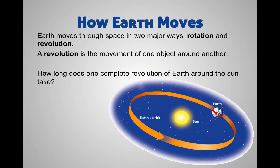Starting off with how Earth moves — we know that Earth moves in space in two major ways: rotation and revolution. Revolution is the movement of one object around another. We see in the picture there that the Earth is moving all the way around the sun. The moon also does the same going around the Earth, as do all moons around planets and all planets around stars — they are revolving, going through one revolution, one object around the other.